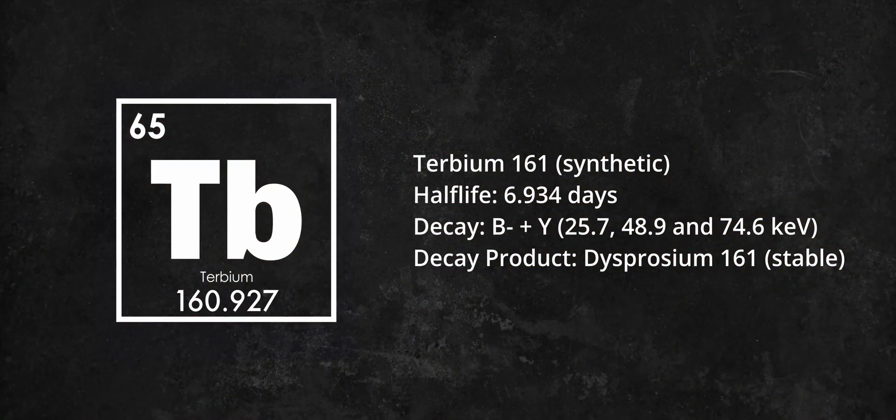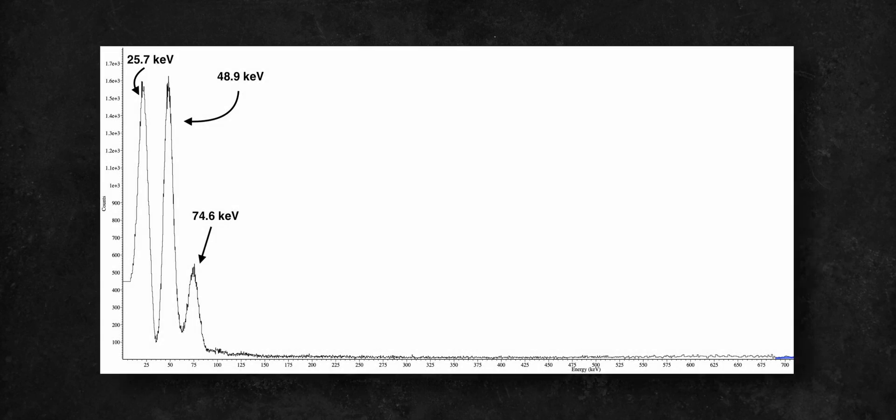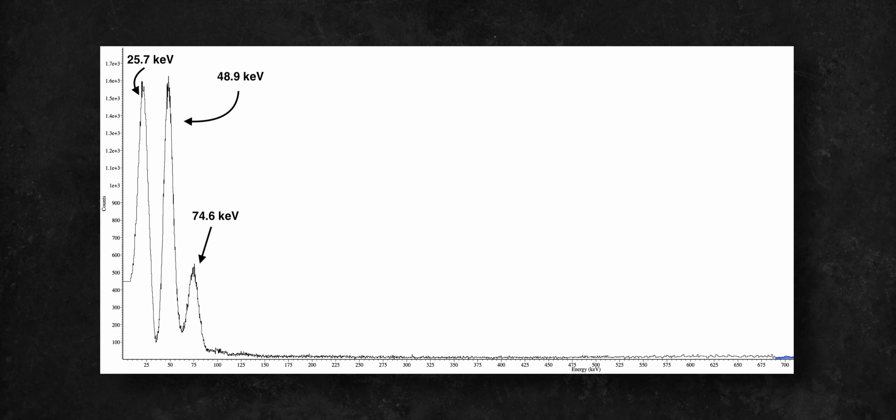It has a half-life of just under 7 days, and it decays via beta emission into stable Dysprosium-161. In the process, it also releases gamma rays at 25.7, 48.9, and 74.6 keV, which my gamma spectrometer had no problem detecting.